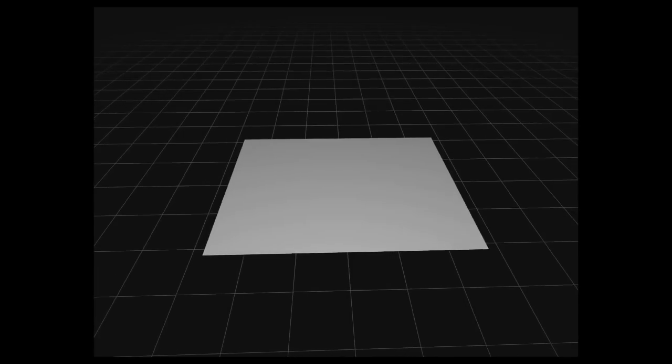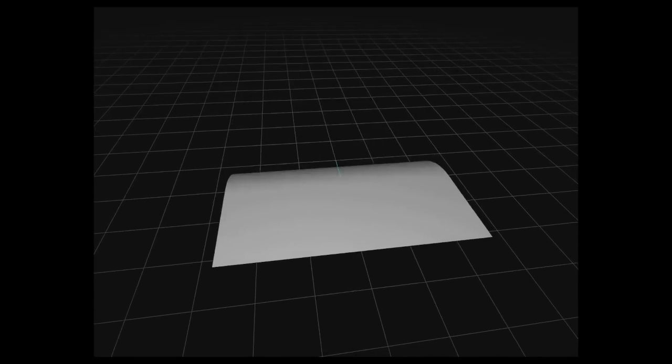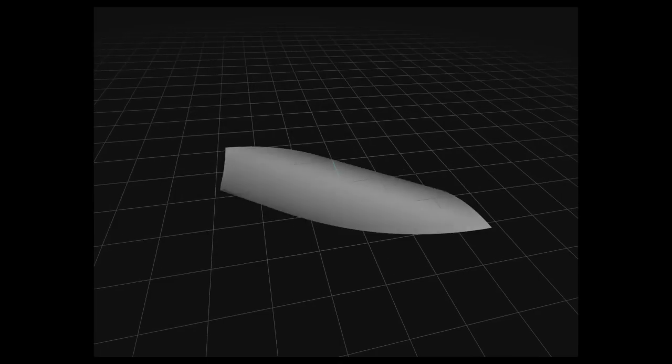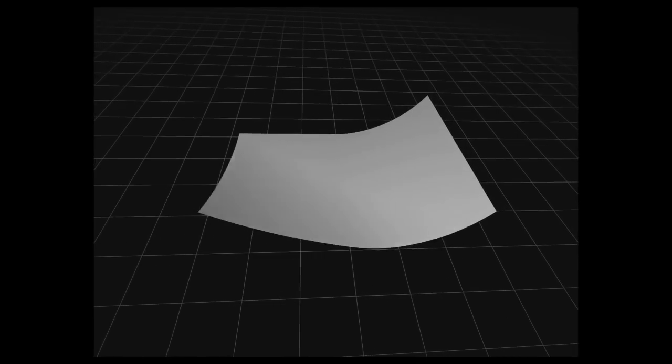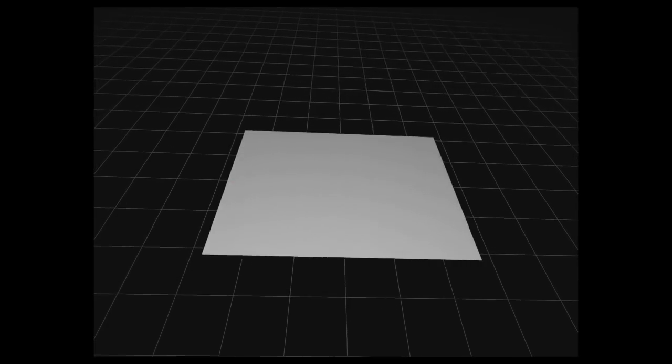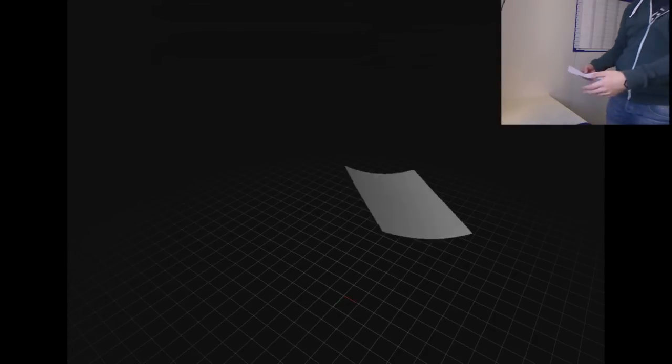FlexPad creates a detailed model of the deformed surface in real-time. It uses only data from the Kinect depth sensor. Our approach identifies not only 3D location and rotation of the display, but also nine deformation parameters.